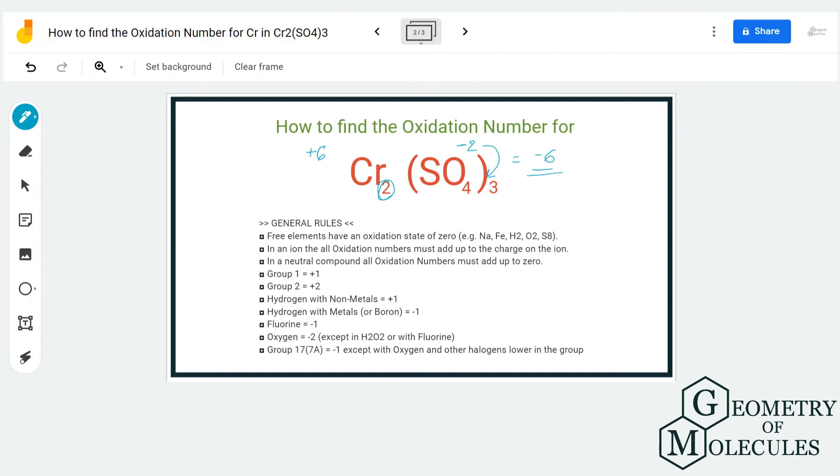So each chromium atom will have an oxidation number of 3 and hence will have a charge of plus 3. Which means that chromium in Cr₂(SO₄)₃ has 3 as its oxidation number.